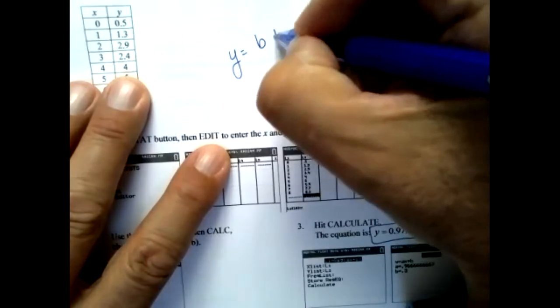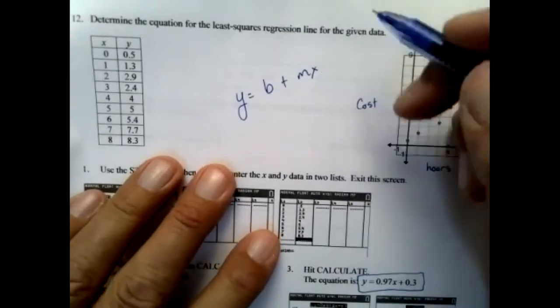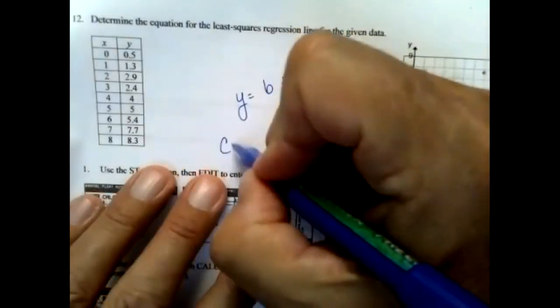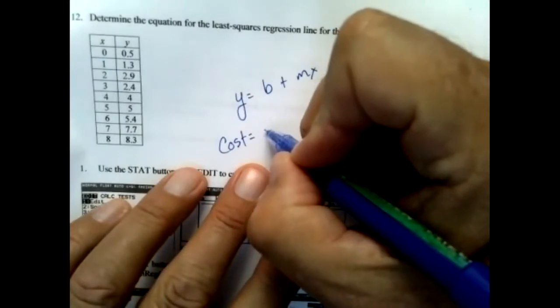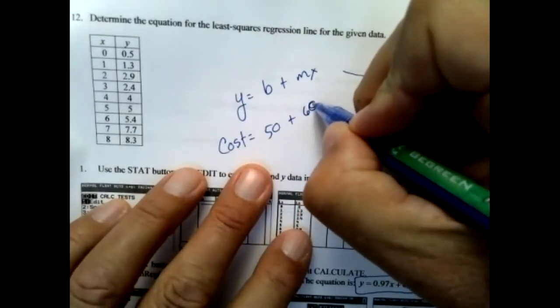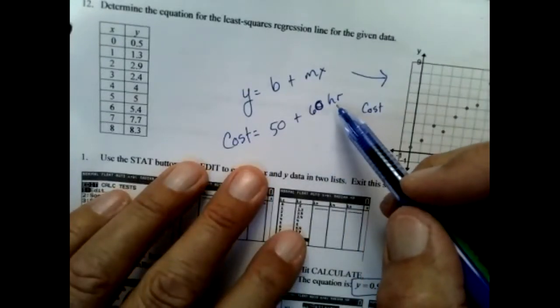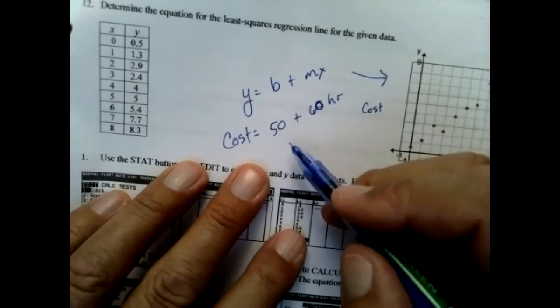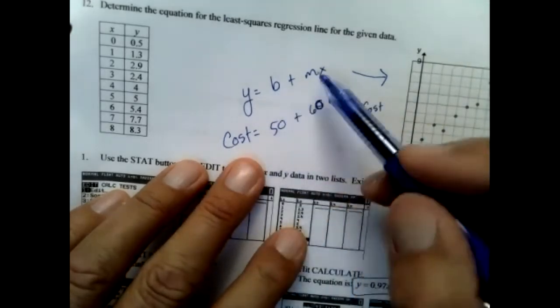I'd love to do more with this but we don't have time. In real life, if the cost was a plumber — you have to pay like $50 for him to show up, and then once he shows up it's $60 per hour — you know if he works three hours it's that initial $50 plus $60 for every hour, giving you the cost. This is why I like b + mx.